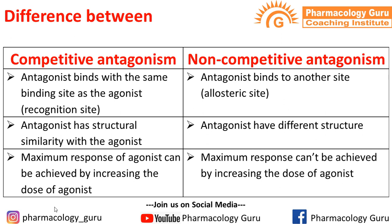We'll discuss the difference between competitive and non-competitive antagonism. These are the two major types of antagonism. In competitive antagonism, as the word indicates, there is a competition between the agonist and antagonist to bind with the receptor or enzyme. Non-competitive antagonism means when they do not compete with each other for binding.